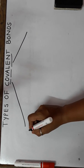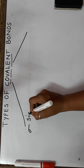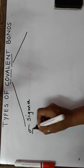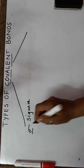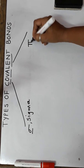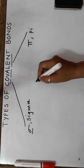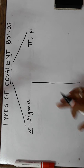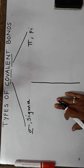So basically there are two types of covalent bonds. The first one is a sigma bond, symbolized as sigma. The second one is a pi bond, symbolized as pi. Let us first understand the basic difference between a sigma bond and a pi bond.